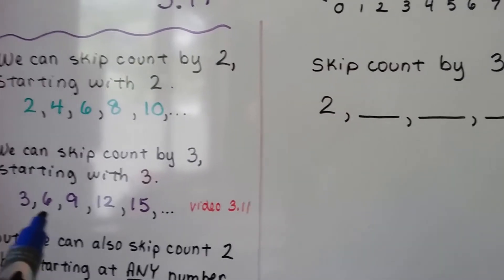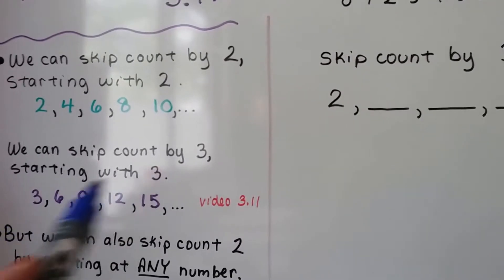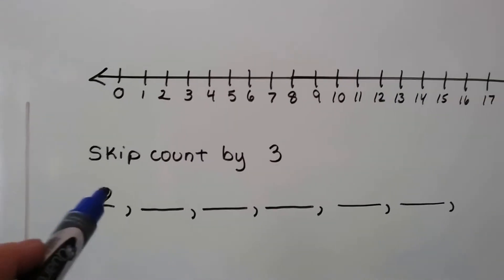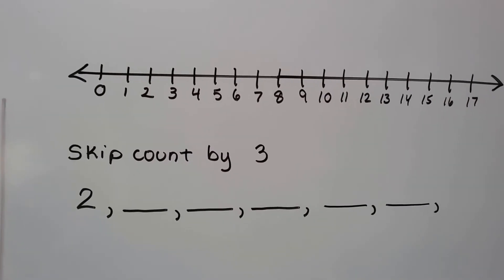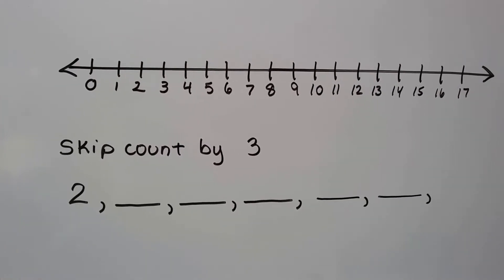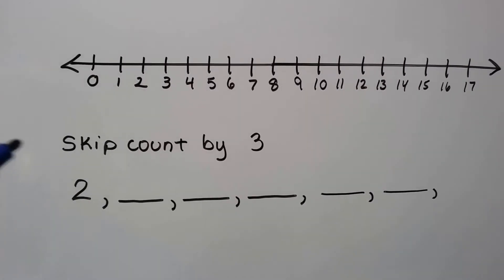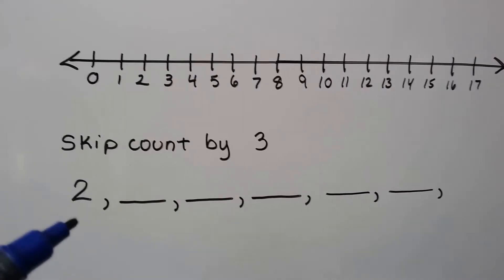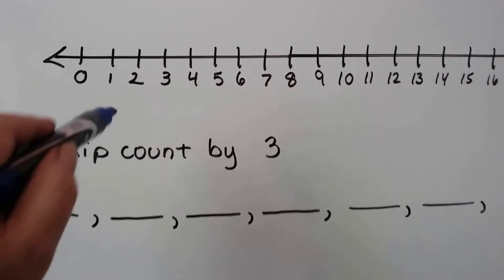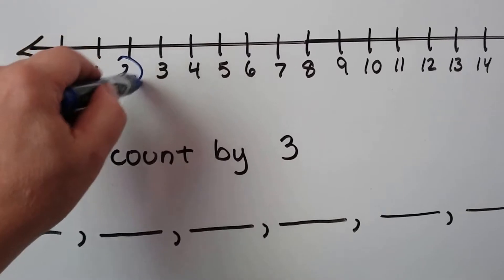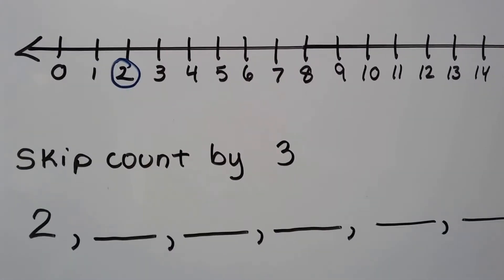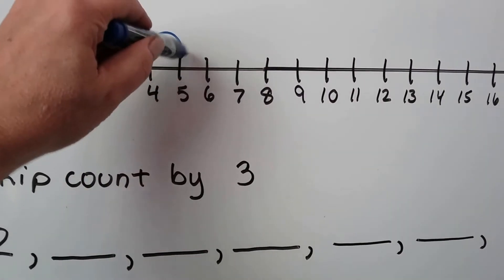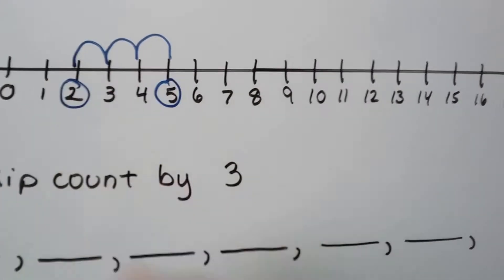When we skip counted by three, we started with the three. But we don't need to start with the three — we could start with a two. It's whatever the math problem tells us we need to do. If we have skip count by three and we're starting with a two, then we find the two on the number line — it's right here. And we skip count by three, we make three hops: one, two, three. That's going to bring us to a five.